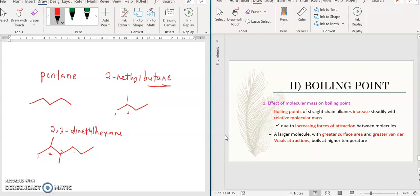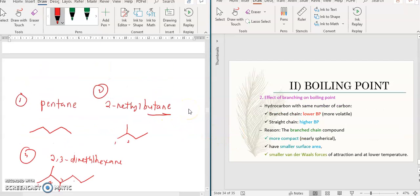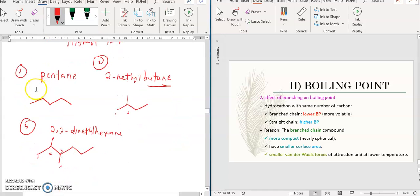1 at carbon 2, 1 at carbon 3. So 2 methyls, that's why it's called dimethyl. So there's compound 1, compound 2, compound 3. We want to see which one has the highest boiling point. So first we compare the first and second one.